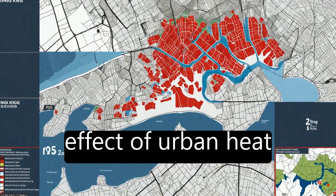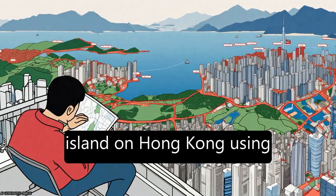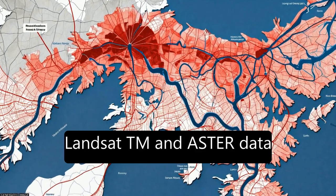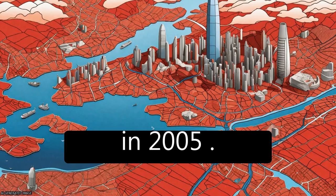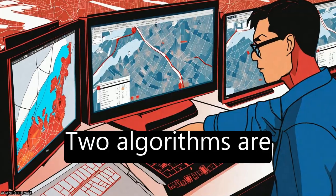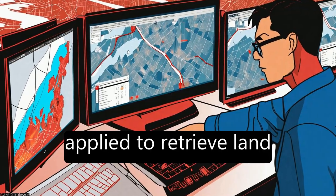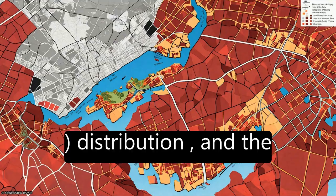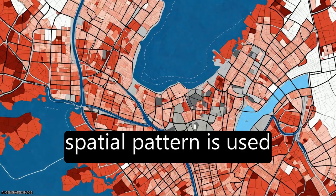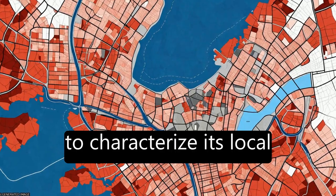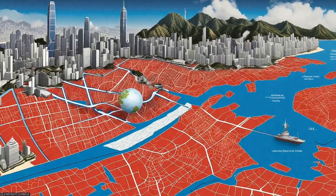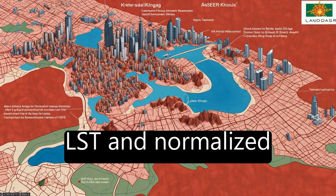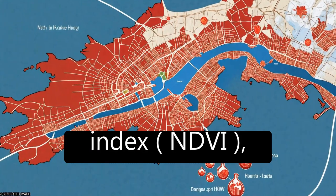This paper analyzes the effect of urban heat island on Hong Kong using Landsat-TM and AstroData in 2005. Two algorithms are applied to retrieve land surface temperature (LST) distribution, and the spatial pattern is used to characterize its local effects. The correlation between LST and Normalized Difference Vegetation Index (NDVI),